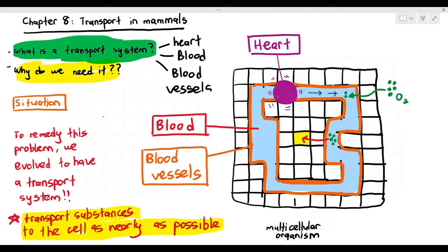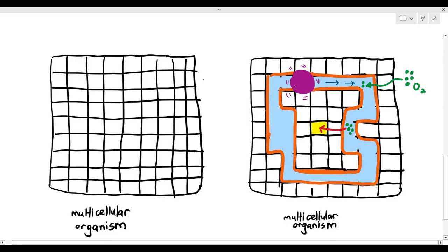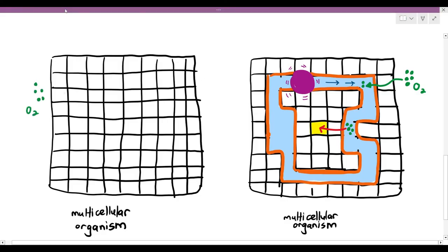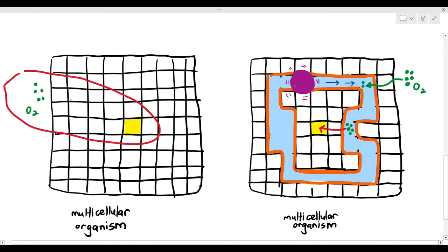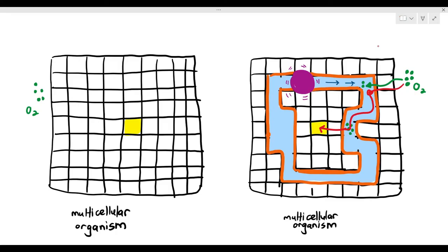To summarize: we have two multicellular organisms — the one on the left has no transport system and the one on the right does. Without a transport system, substances like oxygen have difficulty diffusing all the way to deep cells because the distance is too far. With the transport system, oxygen enters the blood, blood is pumped towards the cell, and the diffusion distance is minimized. The transport system basically minimizes the distance required for diffusion, making it easier for cells in multicellular organisms to receive substances and also to give up wastes.